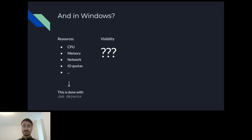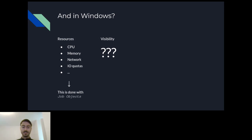But this talk is about Windows containers, so let's move forward to Windows. In order to create a good container solution in Windows, the same requirements need to be implemented here. Luckily, Windows had a solution for resource limitation for years — it's called job objects, and they do pretty much the same thing as cgroups in Linux. There is nothing too interesting about them, but it's important to know that the feature existed in Windows for years. It's not new — it's the Windows version of cgroups.